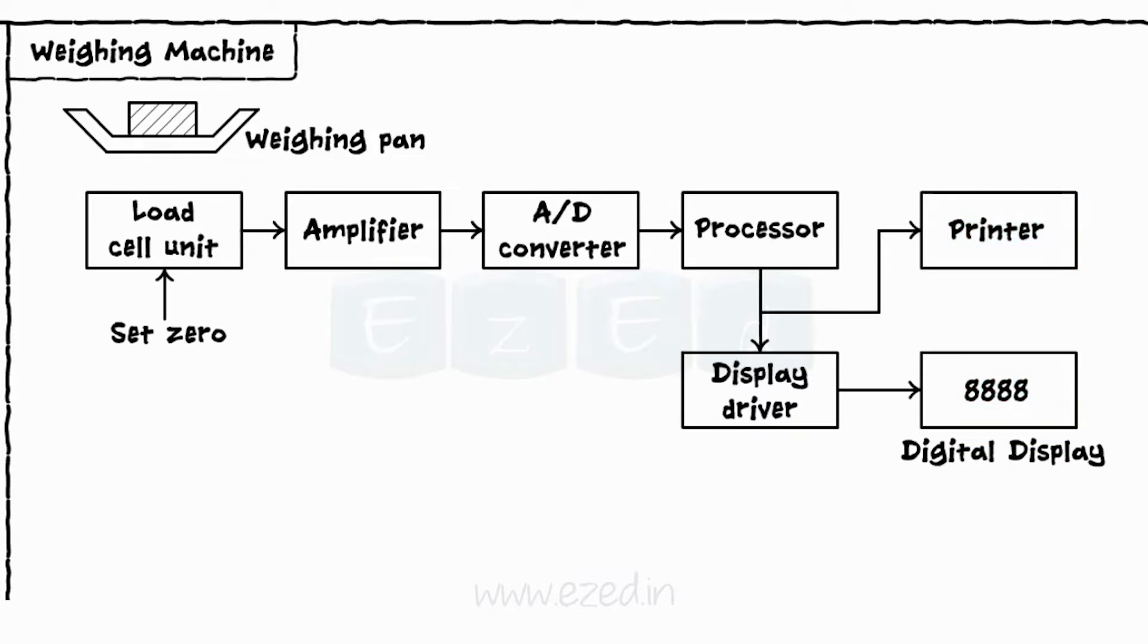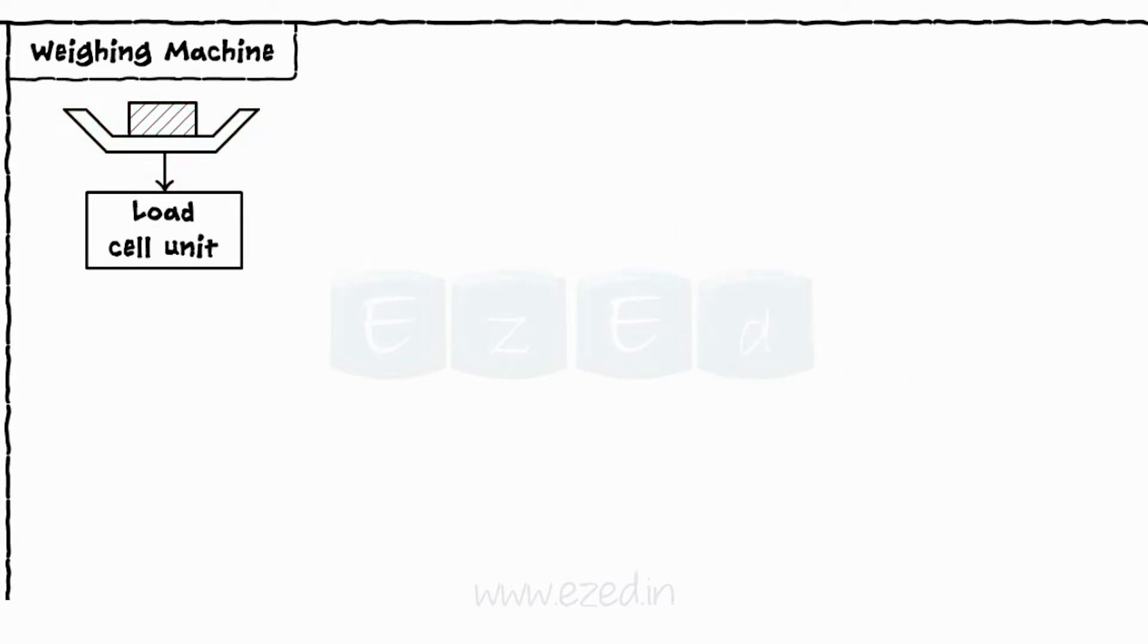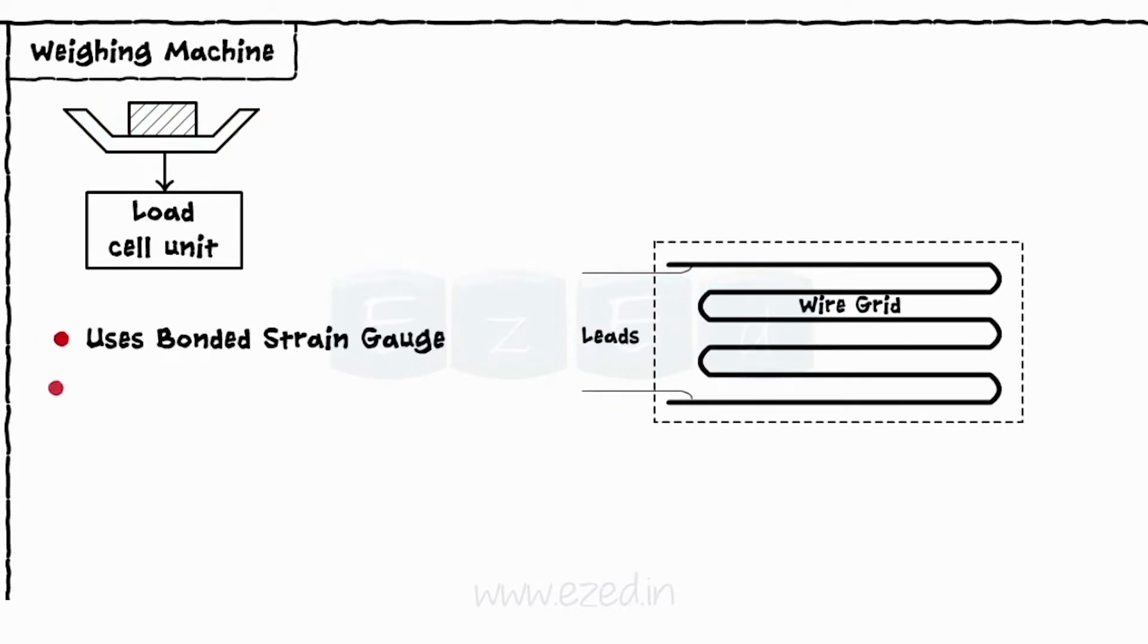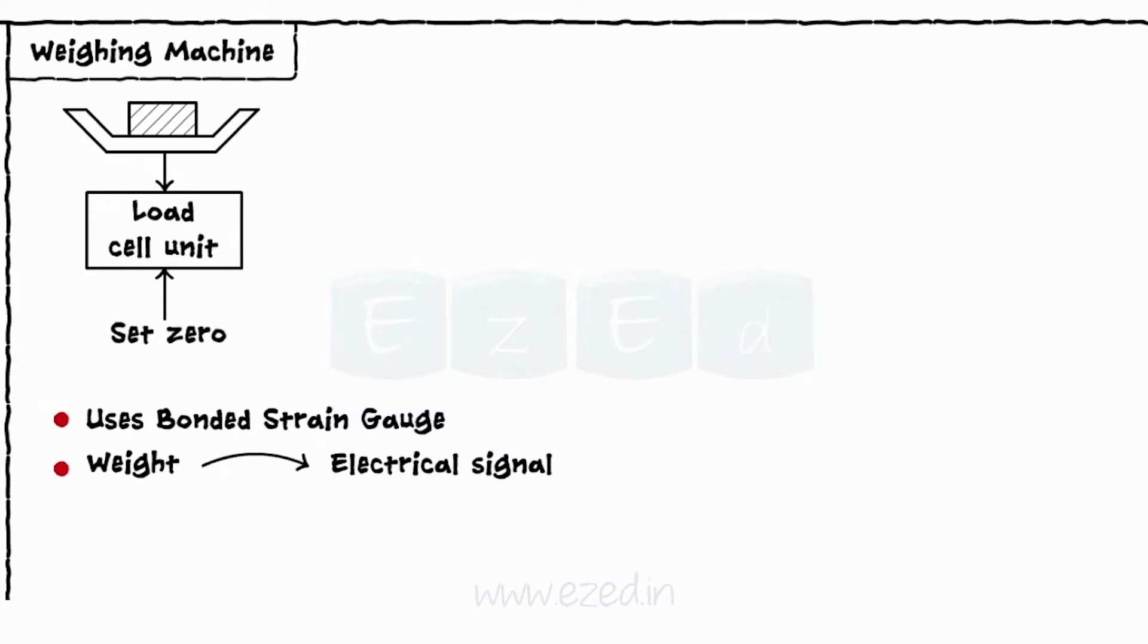Weighing pan is directly connected to a load cell unit. Load cell unit has bonded strain gauge which converts the weight into electrical output. Zero setting adjustment is also provided with load cell unit.